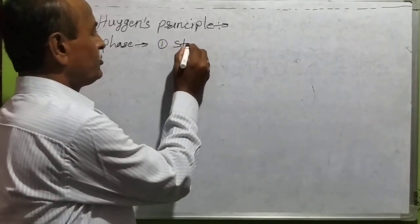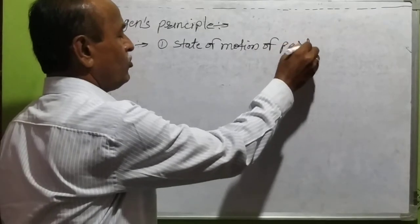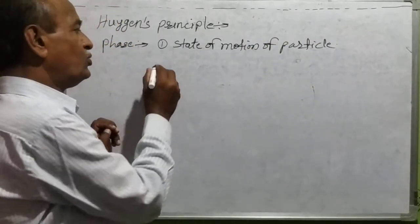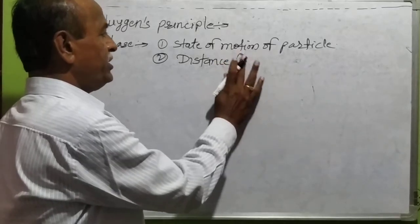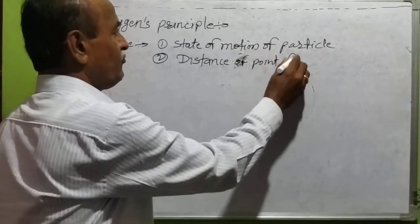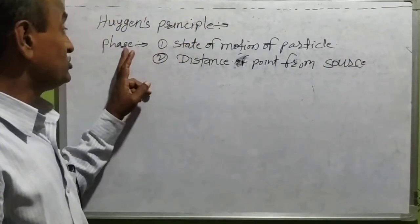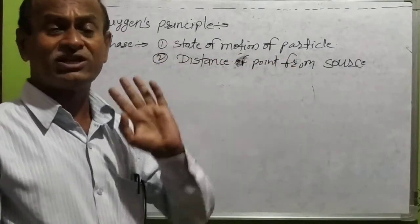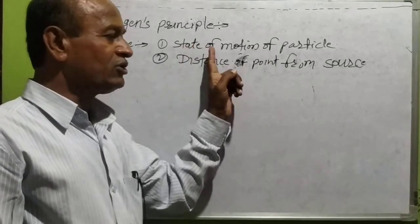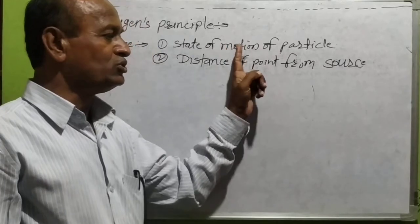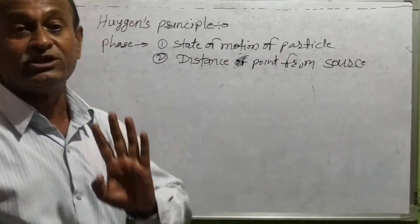Number one, state of motion of particle. And number two, distance of point from source. Phase of wave is defined as the state of motion of particle at that point, and distance of point from source. This is the definition of phase of wave.